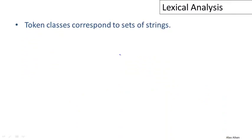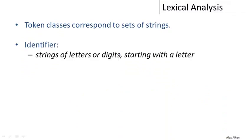Token classes correspond to sets of strings. These sets of strings can be described relatively straightforwardly. For example, the token class of identifiers in most programming languages might be something like strings of letters or digits starting with a letter. A variable name or identifier could be something like A1, or it could be foo, or it could be be17.